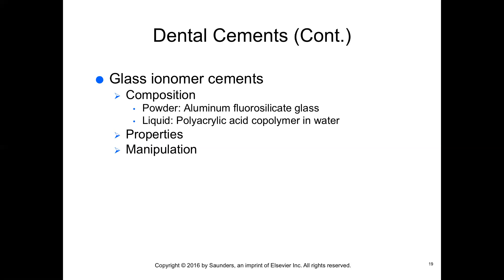Glass ionomer was originally developed for aesthetic restoration of anterior teeth and later used as a permanent luting agent. Uses include permanent luting, luting of orthodontic bands and brackets, restorative materials, low and high-strength bases, and core buildups. The powder is an aluminum fluorosilicate glass with barium glass added for radiopacity, and the liquid is a polyacrylic acid copolymer and water. When mixed, the polyacrylic acid attacks the glass to release fluoride ions. Mild to severe postoperative sensitivity has been reported. Fluoride release during the life of the cement has an anti-cariogenic effect, and increased solubility has been demonstrated with early moisture contamination during the first 24 hours.